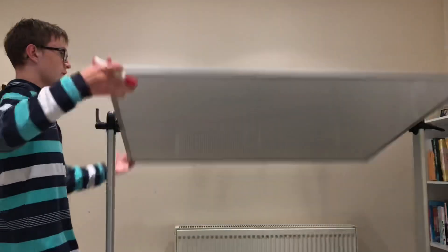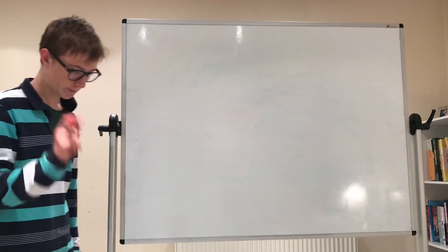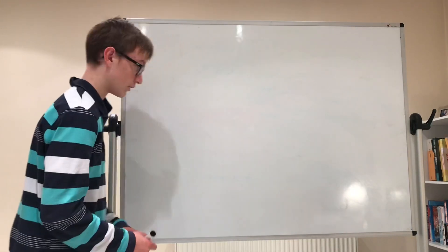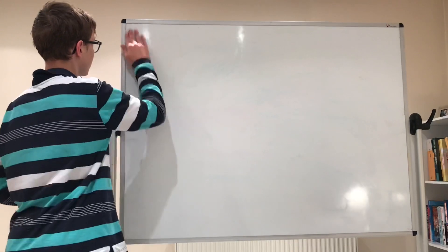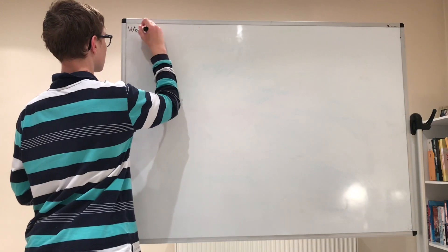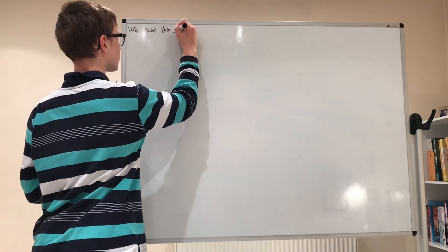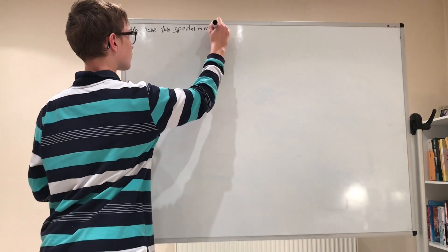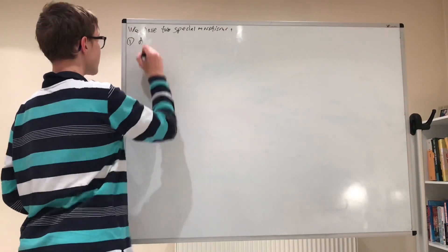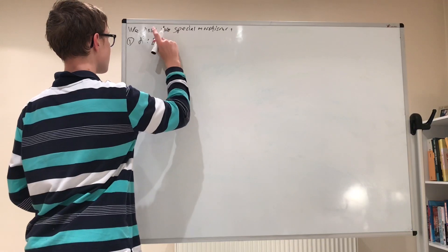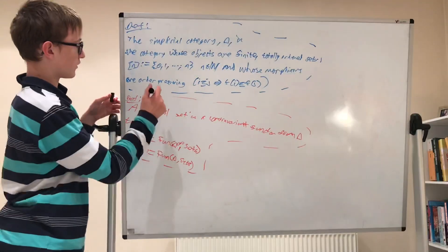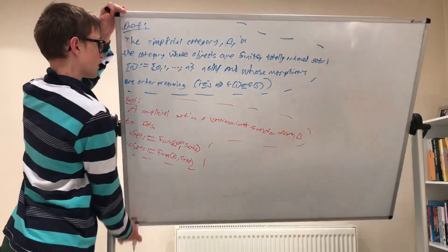Now, the goal of this video is to study two very special morphisms in this category. We have two special morphisms. The first one is denoted by di, and it takes you from n minus one to n. Recall that this is the set, right there, the object of this category.